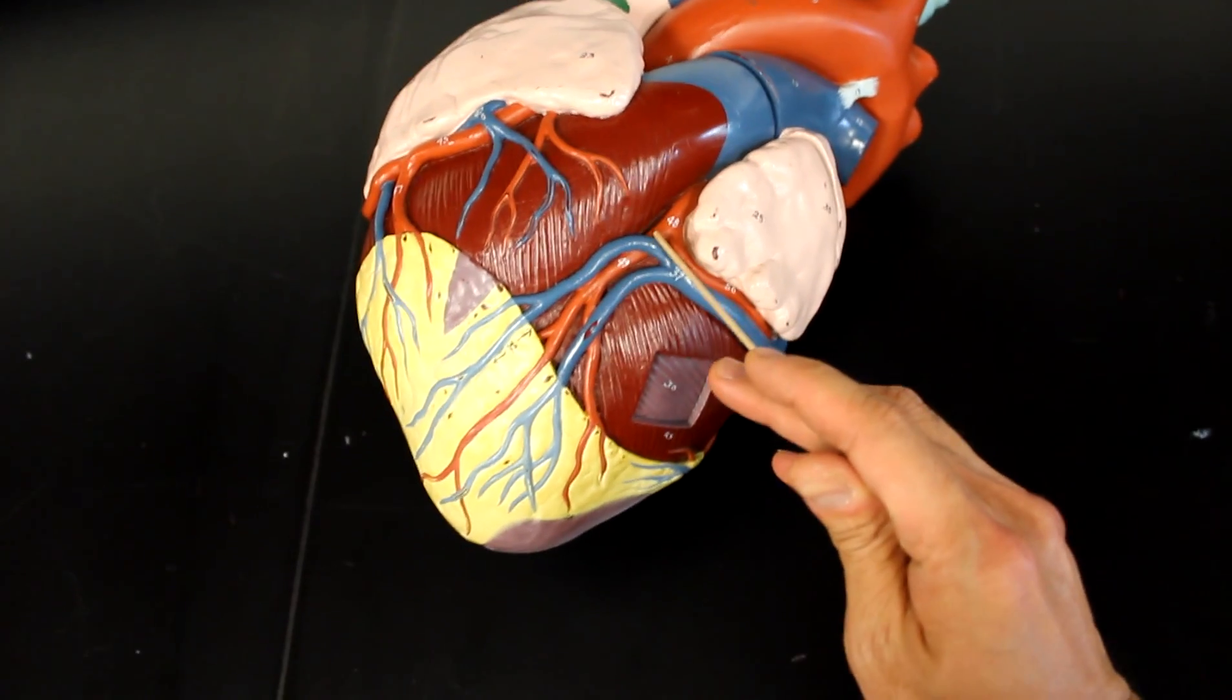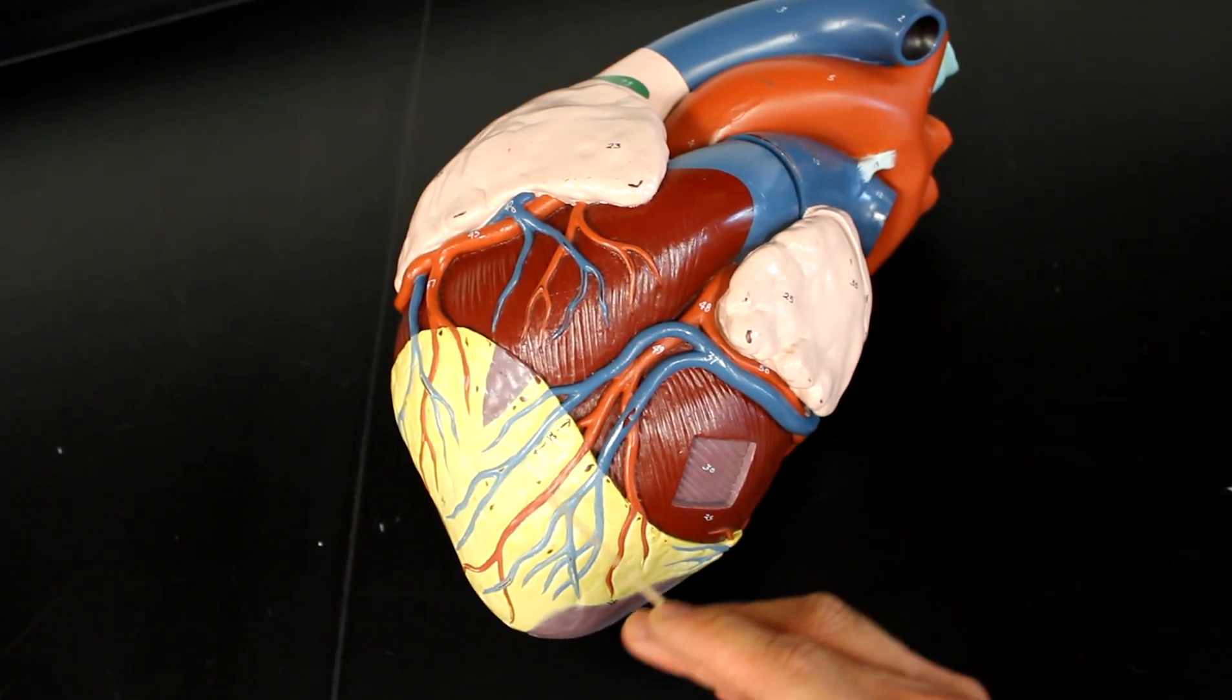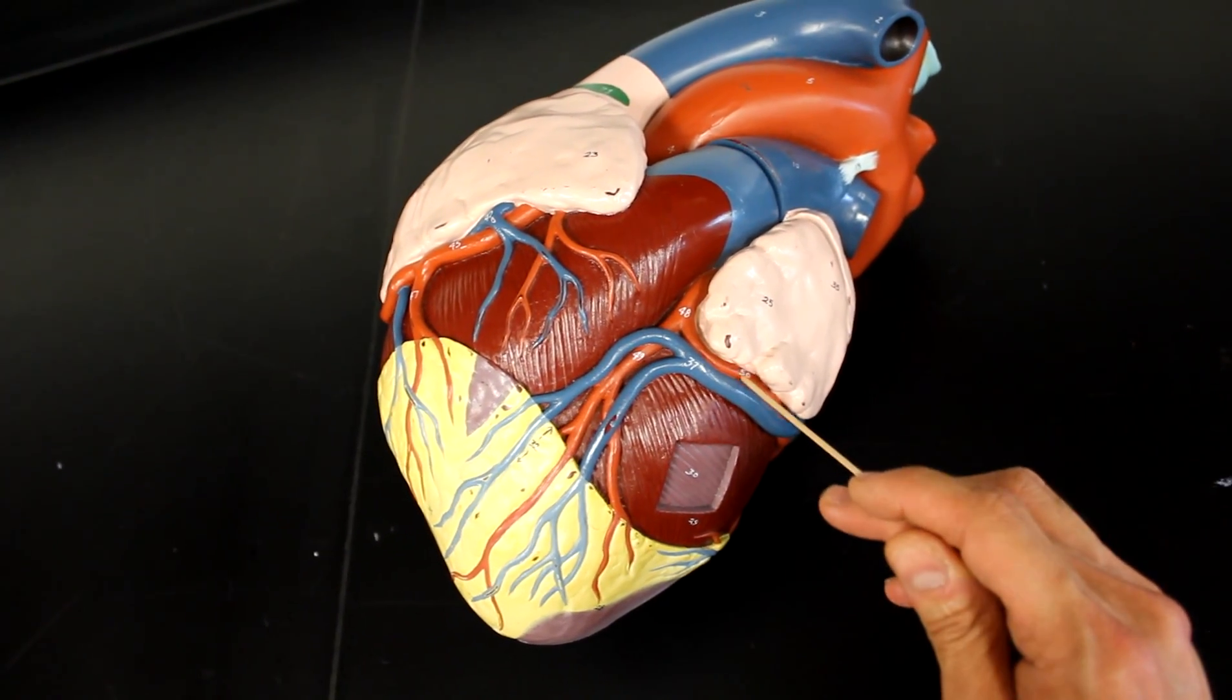While the left one becomes the anterior interventricular branch and the circumflex.